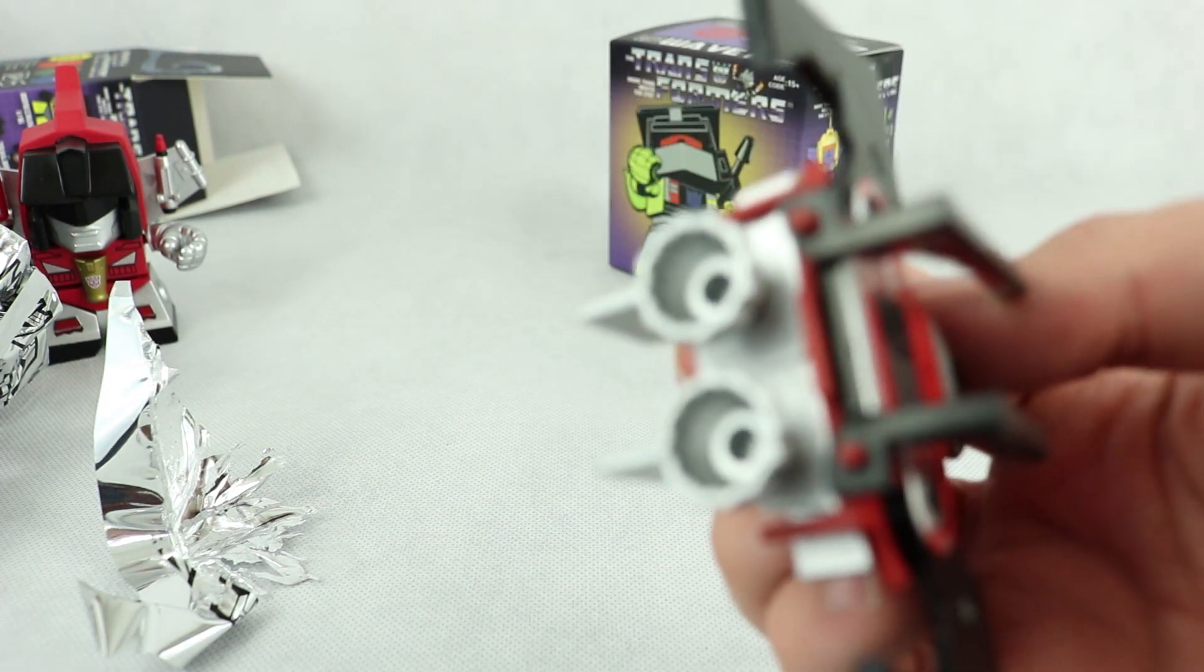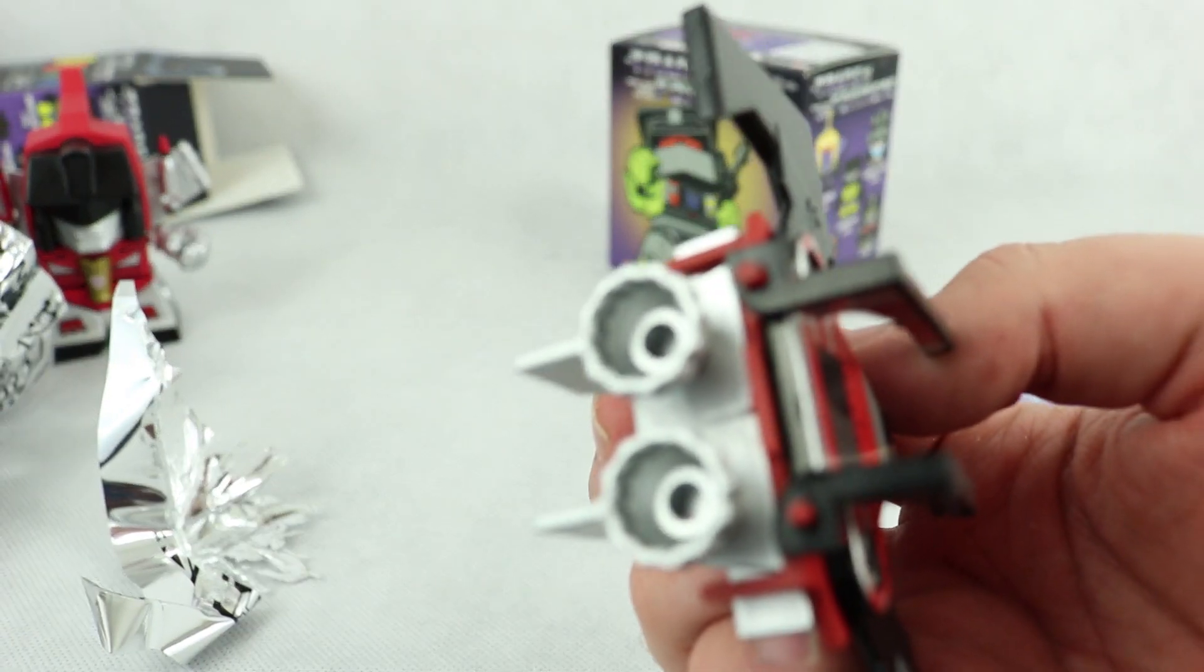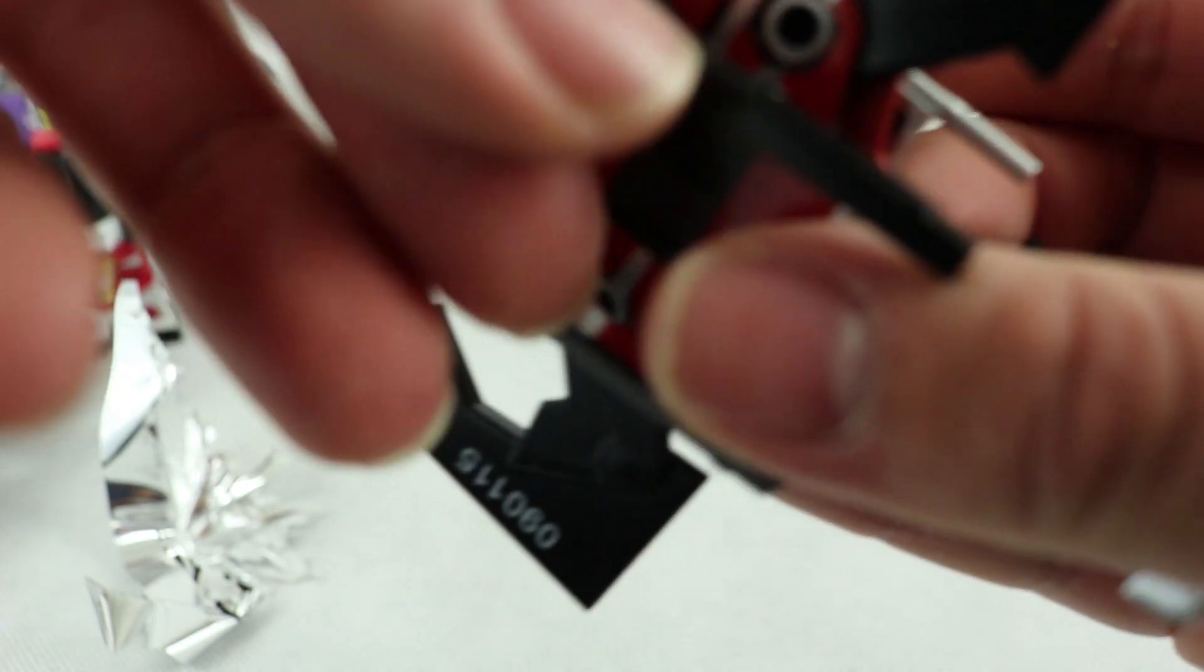Yeah you can see here there are little like peg joints here. So it kind of moves like that and yeah you can take them off as well. Not that you'd probably want to but as you can see here I think when I was going to pose it it's got a loose. I need to probably fix that up.